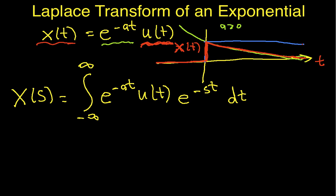And because u of t is 0 for values of t less than 0, that means that I can change this lower limit of integration to 0. As this is written, this is the bilateral Laplace transform. Now it looks like the unilateral Laplace transform. So in this case, because my signal starts at 0 and goes to infinity, the bilateral and unilateral Laplace transforms are the same.